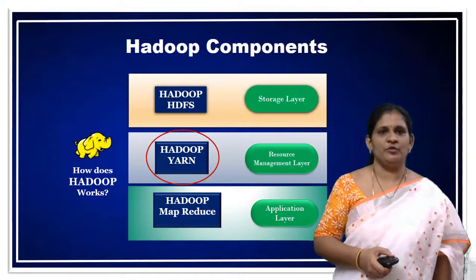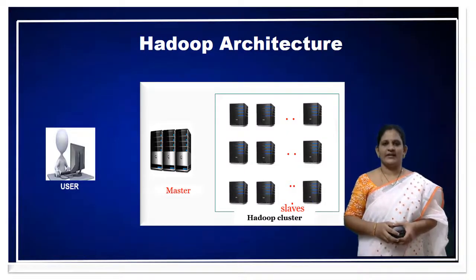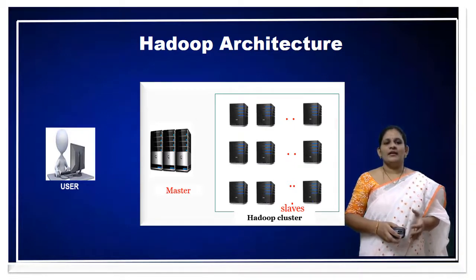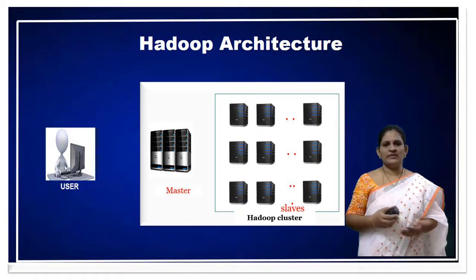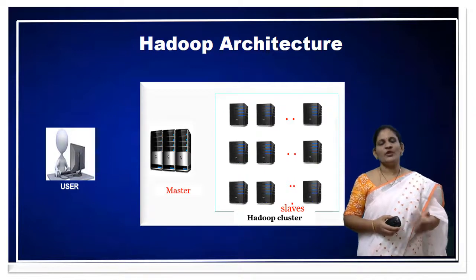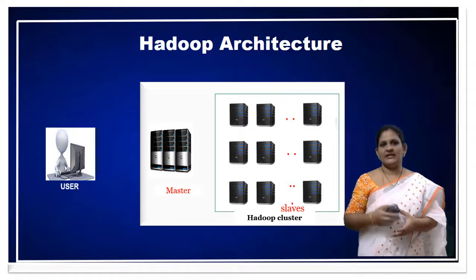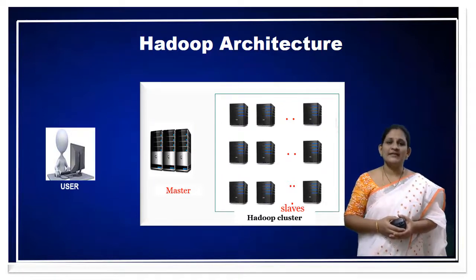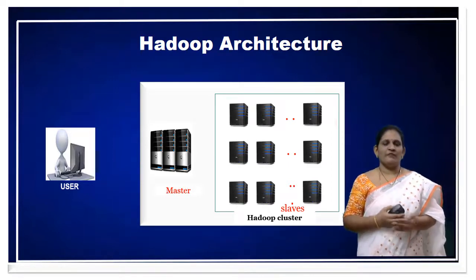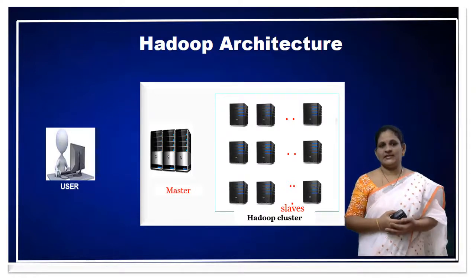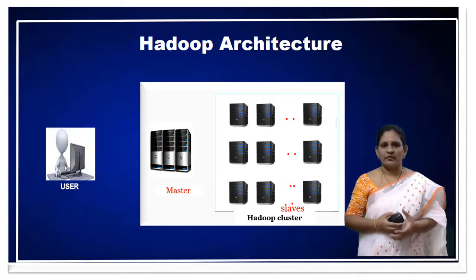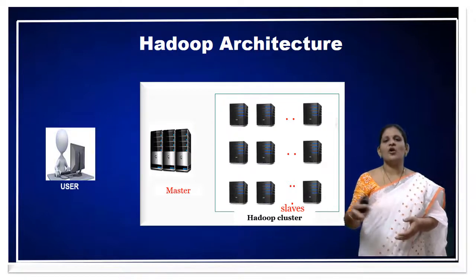We will now move to the Hadoop architecture. In this architecture, there are many elements like user, master, slaves, and others. We know what Hadoop and its components are from previous classes. In this topic, we will be discussing very low-level terminologies. At a very low level, Hadoop is a software which needs to be installed first in order to work on it.